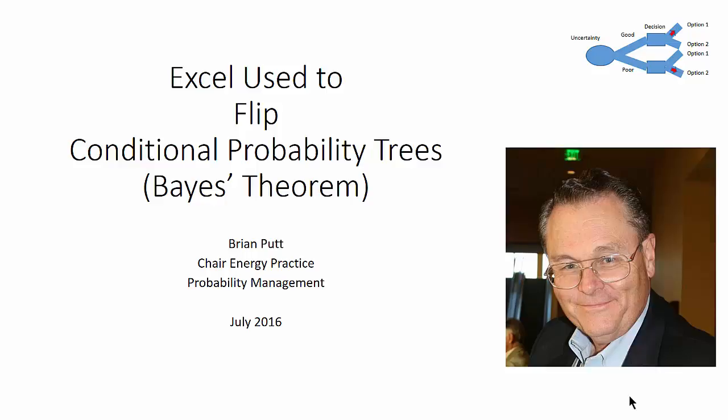This is Brian Putt. Today I want to talk about using Excel to flip conditional probability trees. Sometimes people have a tree where they have the probabilities of reality and then they've assessed the probabilities of an indicator reflecting a reality and they need to flip that tree using Bayes' theorem.